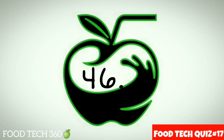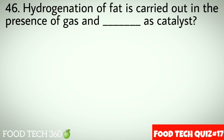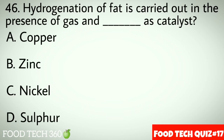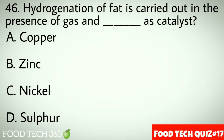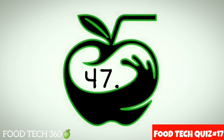Question number 46: Hydrogenation of fat is carried out in the presence of hydrogen gas and dash as catalyst. Options: A. Copper, B. Zinc, C. Nickel, D. Sulfur. Correct answer: C. Nickel.